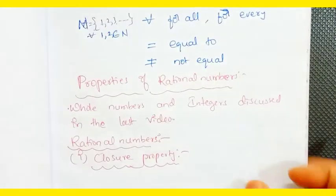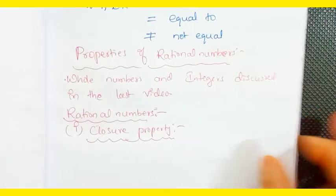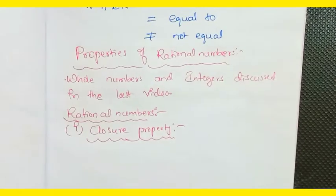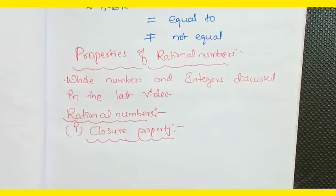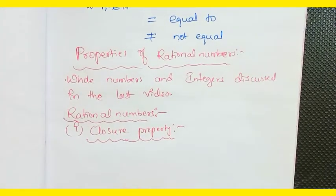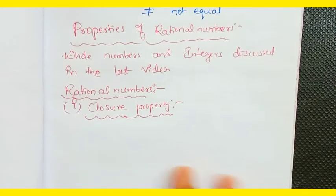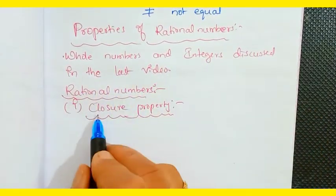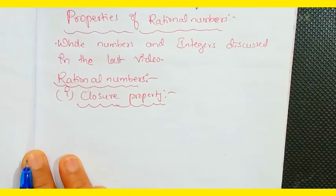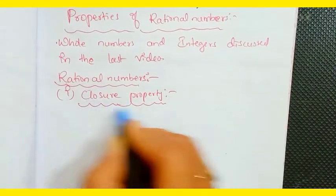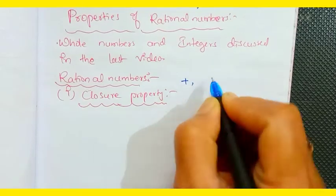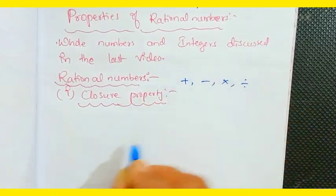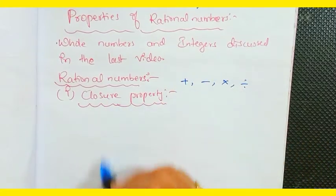Next we go to the properties of rational numbers — this is the continuation part. We discussed whole numbers and integers in the last video. For rational numbers, we will look at the closure property, and cover all four operations: addition, subtraction, multiplication, and division.